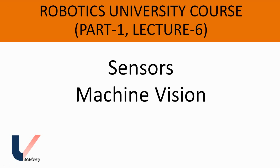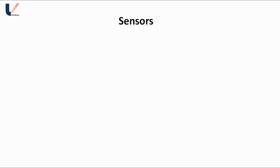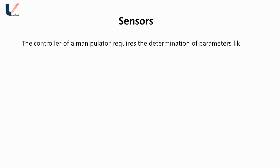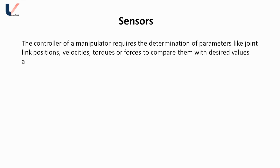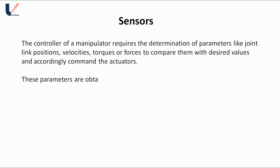Let's start with sensors. Sensors define the intelligence of a robot — the capabilities of a robot greatly depend upon the sensors used. To control the manipulator, the controller requires some parameters like joint and link position, velocity, acceleration, or forces. These parameters are obtained by the sensors.